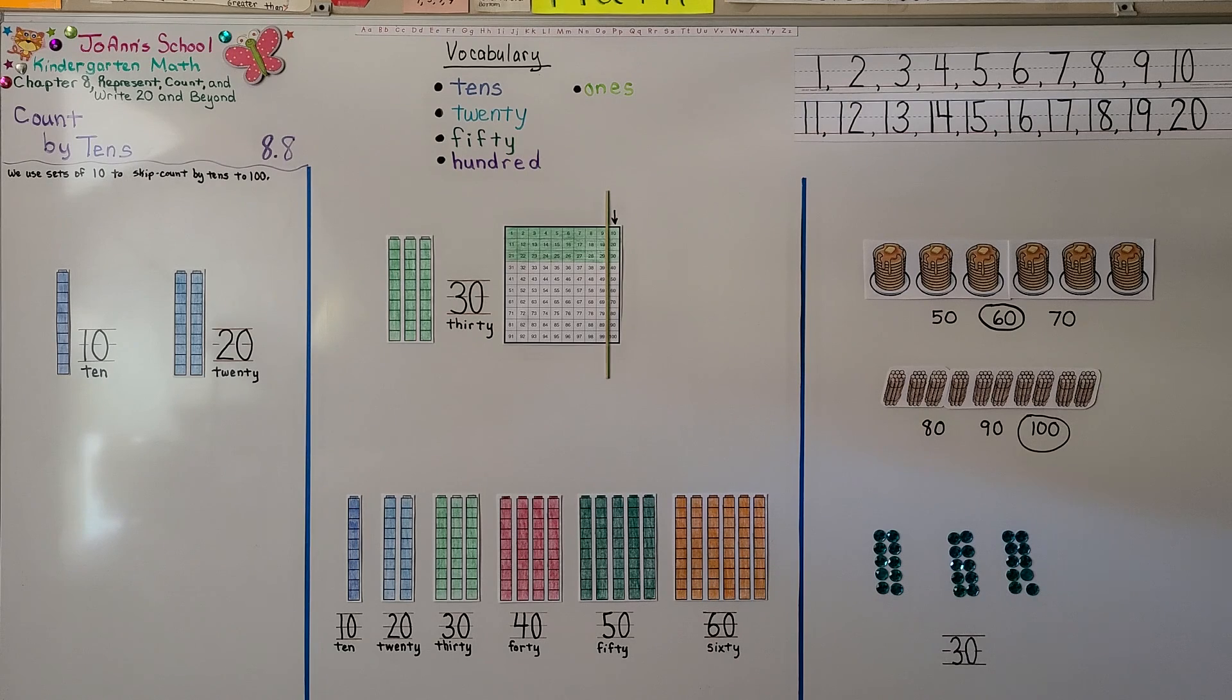This is the last lesson for chapter 8. So practice writing the numbers and practice counting to 100 by ones and by tens. Chapter 9, our next chapter, we're going to identify and describe two-dimensional shapes. Have a wonderful day. And I hope you'll join me. And I hope you'll hit that like button. Bye.